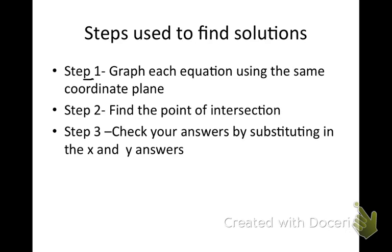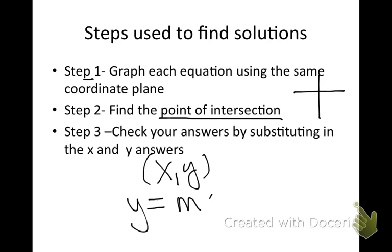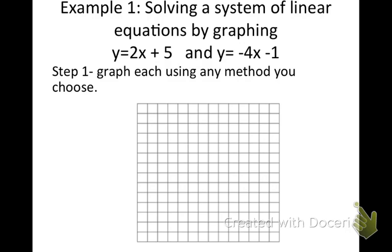You're going to write down the steps we need to use to find our solution. Step one: graph each equation using the same coordinate plane — remember, the coordinate plane is when we're graphing in our x and y coordinates, so we use the same plane for both lines. Step two: find the point of intersection where they cross. Step three: check our answers by substituting the x and y values back into the equation y equals mx plus b to make sure your answers are correct.